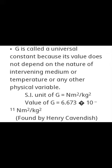Capital G is called the universal constant because its value does not depend on the nature of the intervening medium, temperature, or any other physical variable. The SI unit of universal constant G is Newton meter square per kg square, and its numerical value is 6.673 × 10⁻¹¹ N·m²/kg². It was determined by Henry Cavendish.